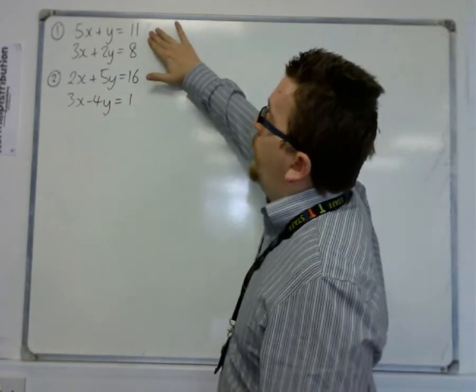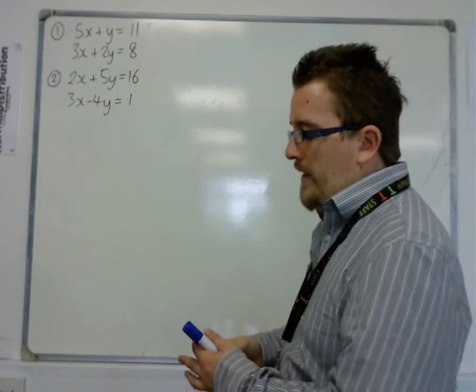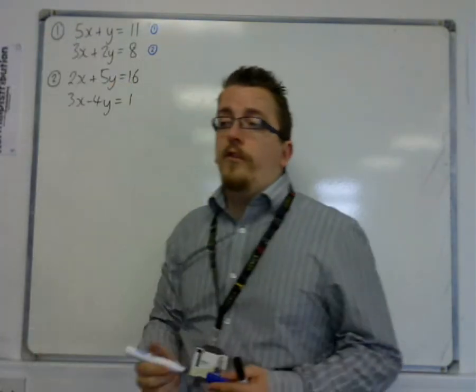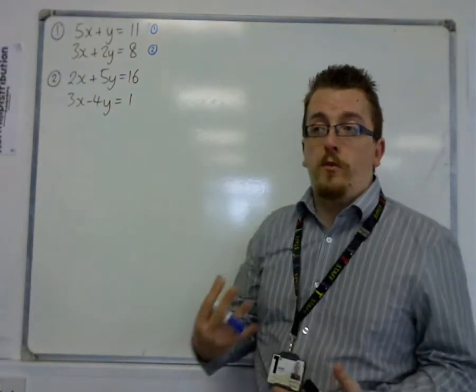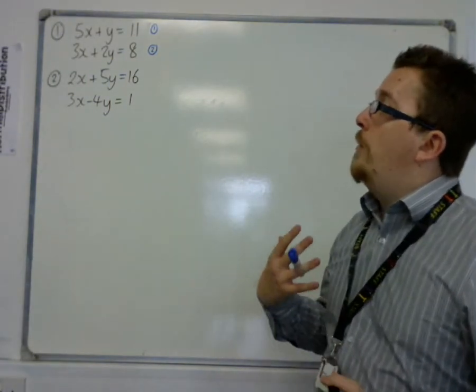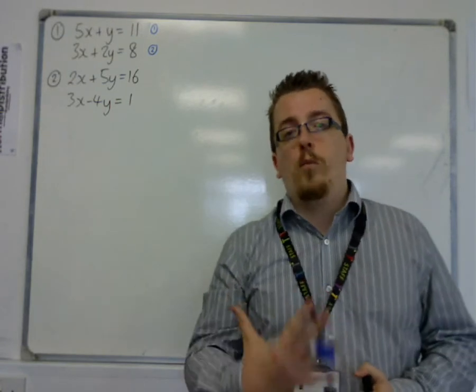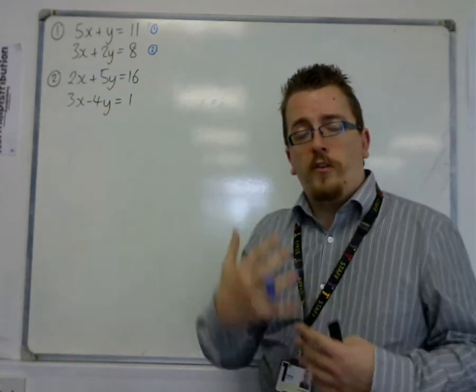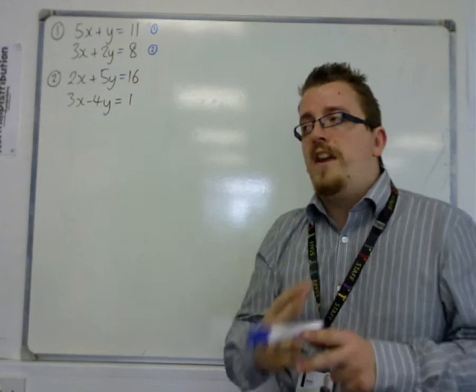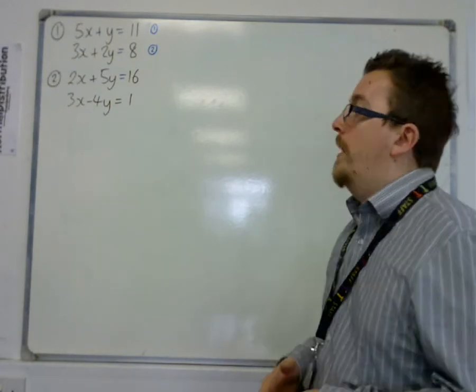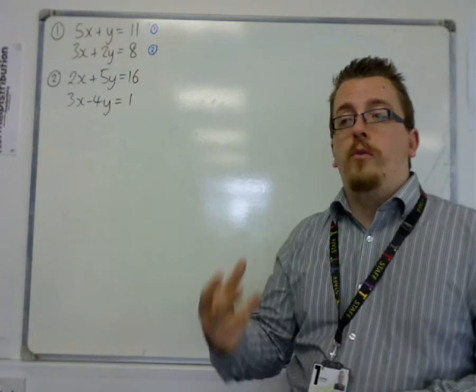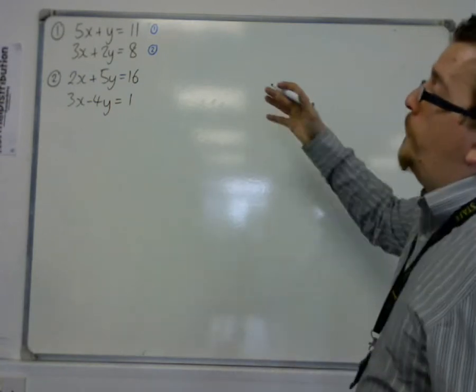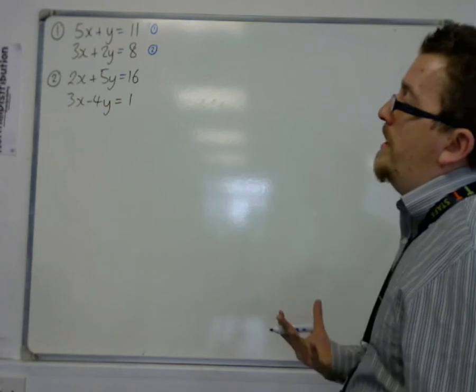Now, question one, we've got 5x plus y equals 11, and 3x plus 2y equals 8. So first of all, number the equations 1 and 2. Now the reason for doing all this numbering was really because I want to make sure that the examiner knows exactly what I'm doing. A lot of the mathematics that you'll learn for A-level maths, you have to explain and make sure that you set your work out in a neat way and in a proper way, really, in order to make logical sense. And also because it's then easier to mark.